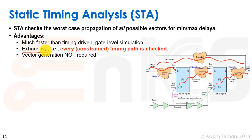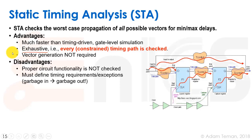Exhaustive means that every single constrained timing path is checked. We may have millions of paths in our design and we check every single one of them to find the worst case, to find any type of slack in our design and fix everything. And we do not need to generate any functional vectors of how the design is actually operating to do static timing analysis.